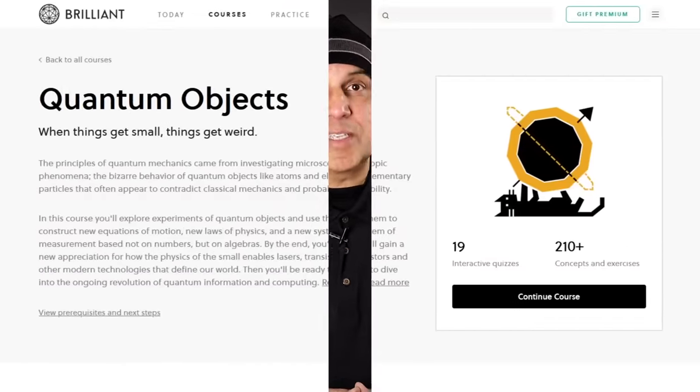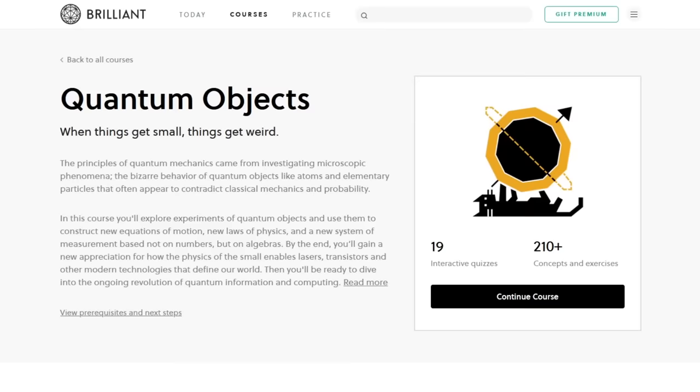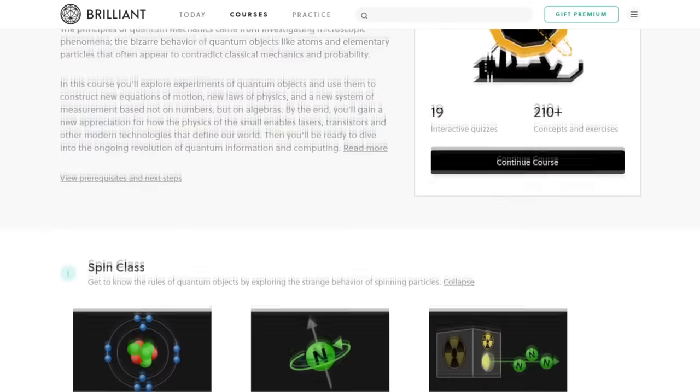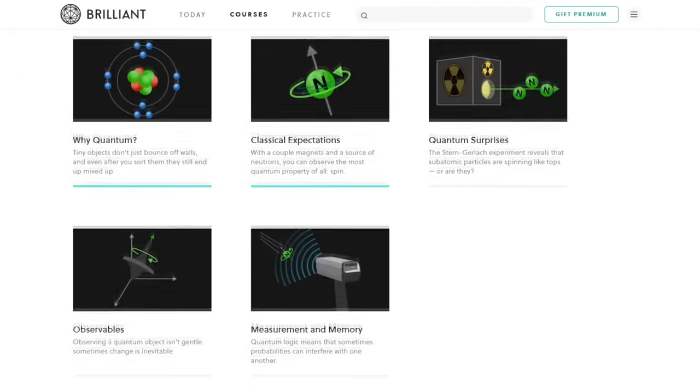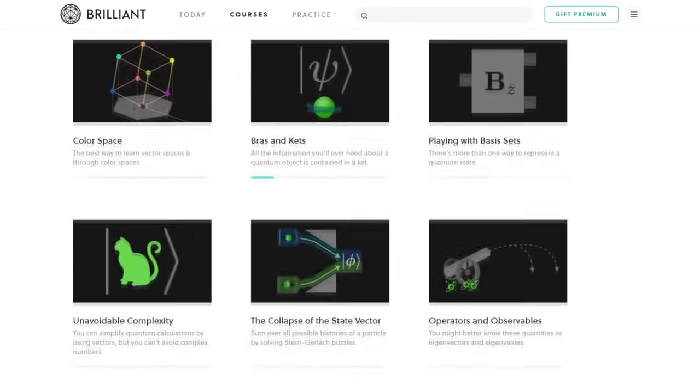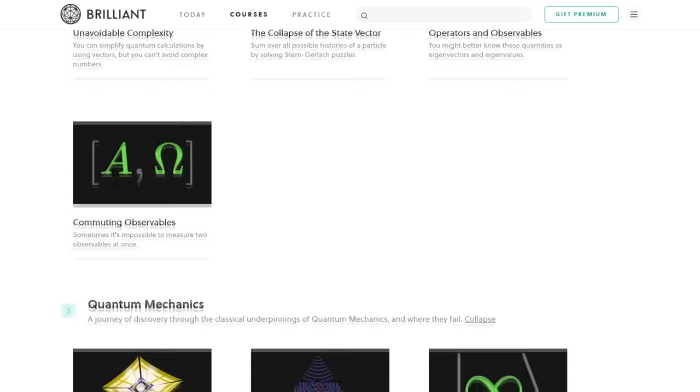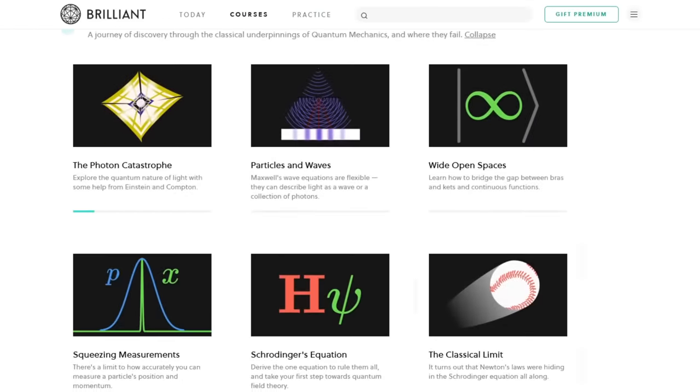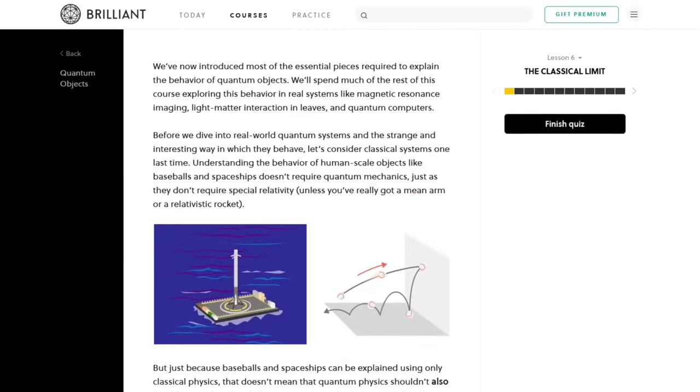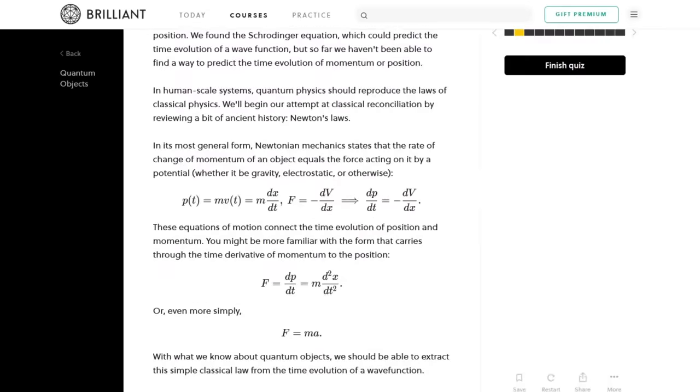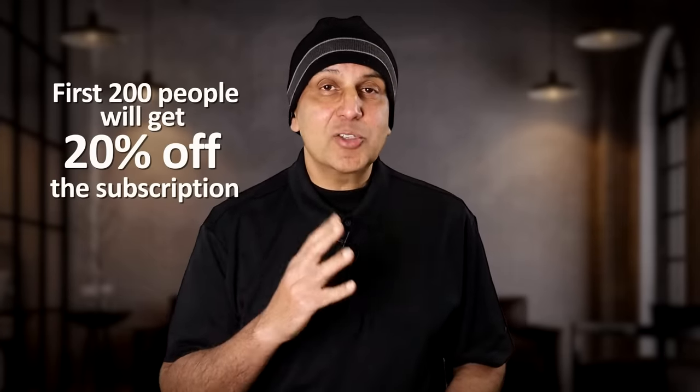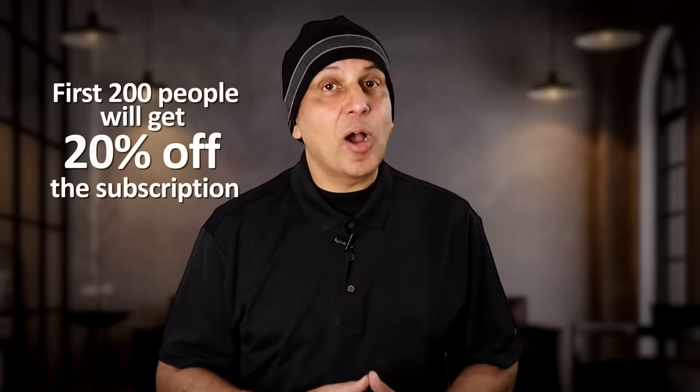If this subject fascinates you like it does me and you want to learn it more in depth, then one of the best intuitive courses offered is at Brilliant, today's sponsor called Quantum Objects. It consists of 18 interactive lessons which take you step by step through the fundamentals of quantum mechanics, including a lesson on the famous Schrodinger equation which contains the wave function. Along the way, you'll take quizzes and solve problems which will make learning these concepts stick with you long term. Brilliant has a special offer for Arvin Ash viewers right now. If you're among the first 200 people to click the link in the description, you'll get 20% off your subscription.